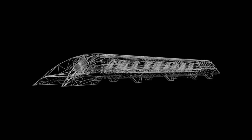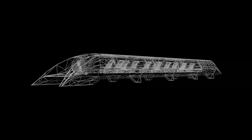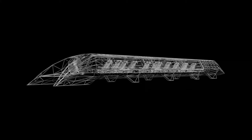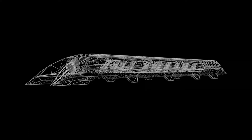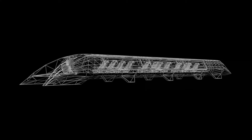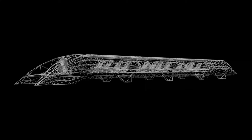Hyperloop systems consist of two main components that each present their own unique challenges. The first and perhaps most technologically complex is the vehicle, or pod, comprising a structure, propulsion system, braking system, and electrical and control systems. These key subsystems each provide different but necessary functions to the Hyperloop pod.